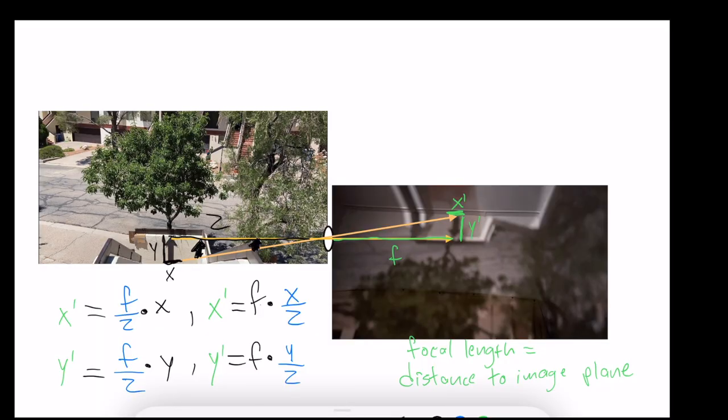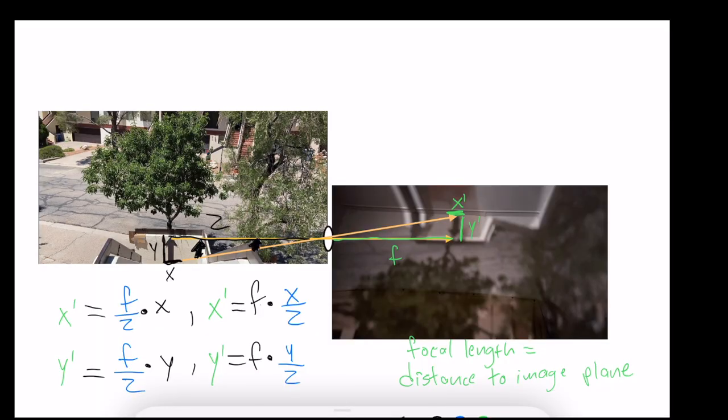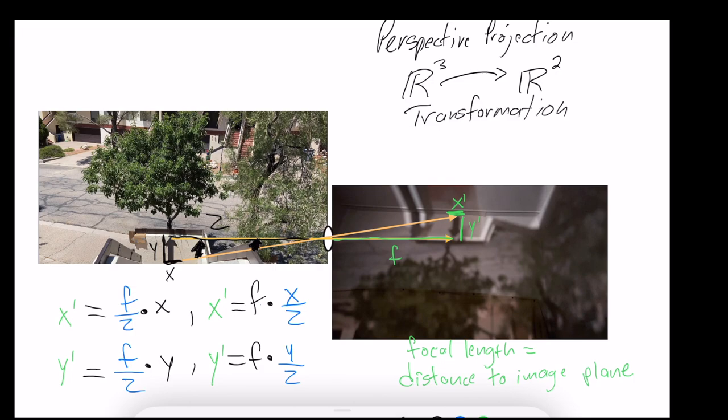Now what this is telling us mathematically is that this transformation that we have, this perspective projection, is taking a three dimensional world that lives in the domain we call R3, meaning that there are three dimensions, to a world where there are two dimensions, a flat world that lives on this image plane. And the fact that we can get different arrows to give us the same image tells us that this transformation that's happening here has no unique inverse.